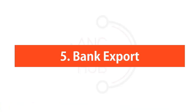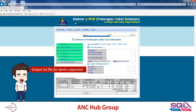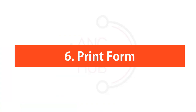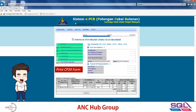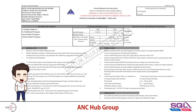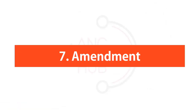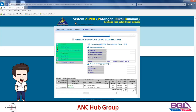Number five and number six are extra features. Number five is the export of a bank TXT file, allowing you to pay through the bank. Number six prints a form for your record purposes. Number seven is for amendment purposes — if you've submitted but haven't made payment and realize you made a mistake, go to number seven, change the status, resubmit, and make payment.